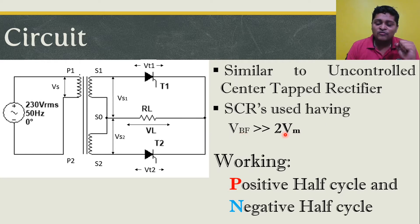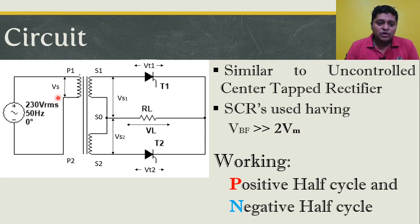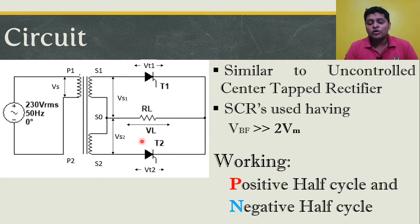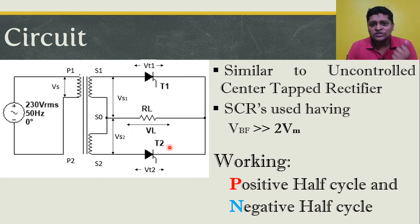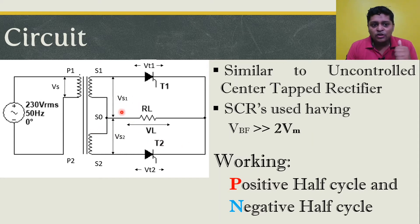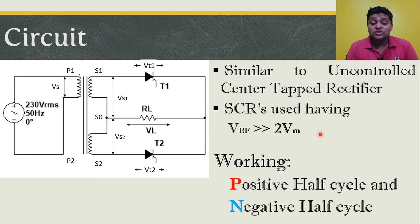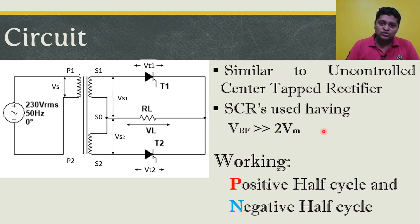The SCRs used in this circuit must have a peak forward breakdown voltage much higher than twice the maximum supply voltage, 2×Vm. During a positive half cycle, the upper secondary produces a positive half cycle and the lower half produces a negative half cycle. When thyristor T2 is in reverse bias, it must handle the peak voltage of both the upper and lower secondary — that is, twice Vm. So SCRs in center tap configuration must be rated for at least 2×Vm.